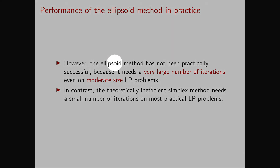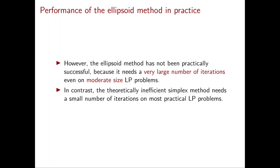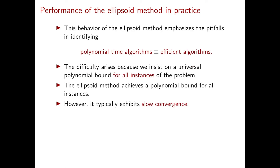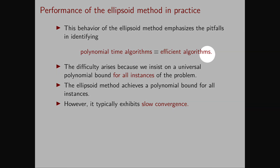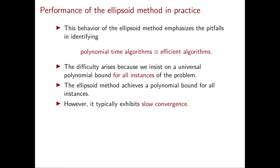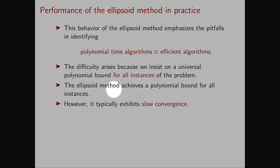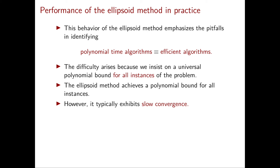From a theoretical point of view, the ellipsoid method is much better than the simplex method. But in practice, the ellipsoid method is very slow, because it needs a very large number of iterations even on moderate-sized linear programming problems. On the other hand, the simplex method needs a small number of iterations on most practical problems. What happens is that while the ellipsoid method achieves its worst-case running time on most problems, the simplex method on most problems is much faster than its worst case. This means there is a clear mismatch between theory and practice, and we shouldn't identify polynomial time algorithms with efficient algorithms in practice.